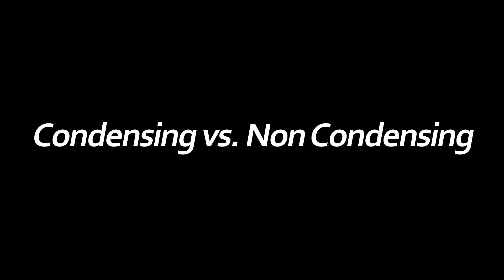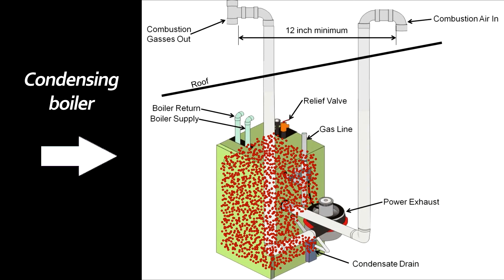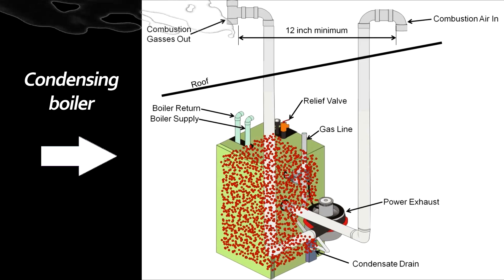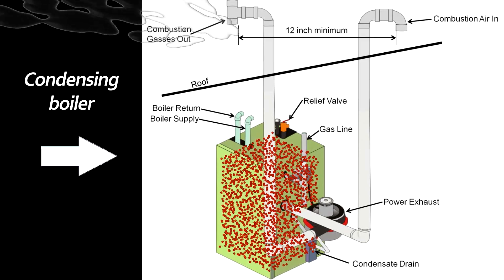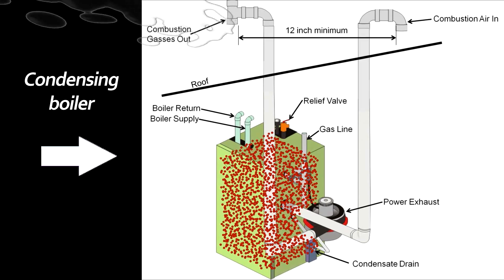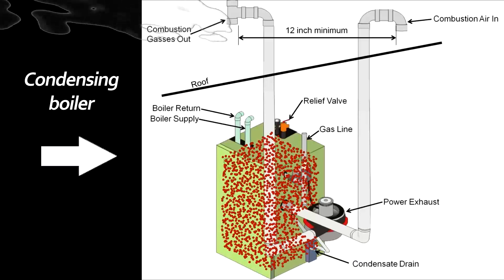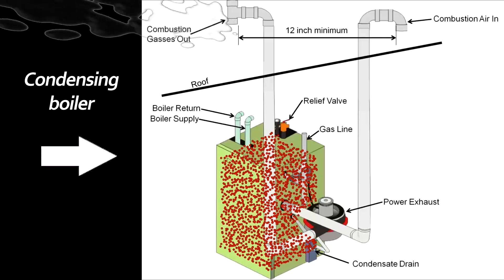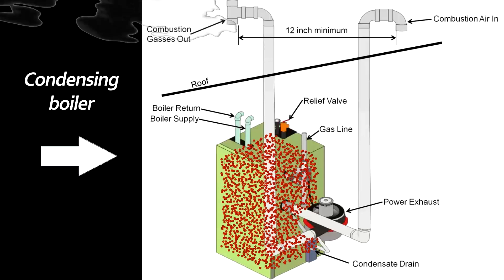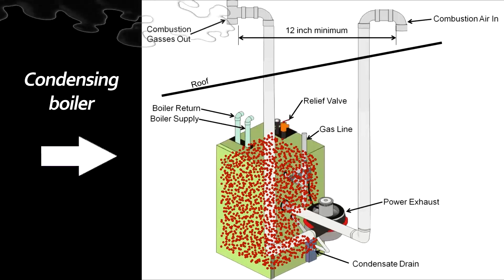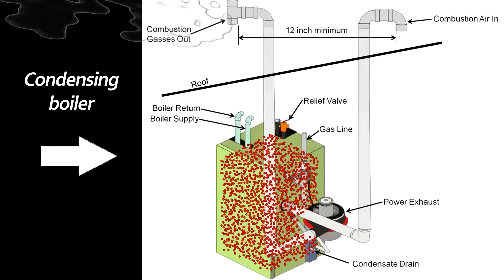Condensing water heaters use combustion gases to heat water in conjunction with the gas burner, rather than venting those gases outside. The heater stays below a certain temperature in order to create condensate, as opposed to heating at very high temperatures. The hot condensate is represented by these swirling bubbles, which makes condensing water heaters more efficient than most other water heaters.